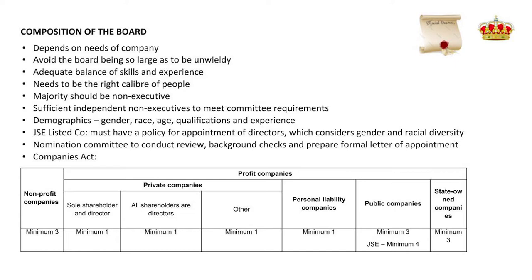If you are a listed company, you will need a minimum of four directors. State-owned companies need a minimum of three. Bear in mind that public companies and state-owned companies are required to have audit committees, which can only be constituted of independent non-executive directors, and must have a minimum of three. Once you overlay King's recommendation that the chairman of the board not be a member of the audit committee, one has to think about having that fourth independent director.